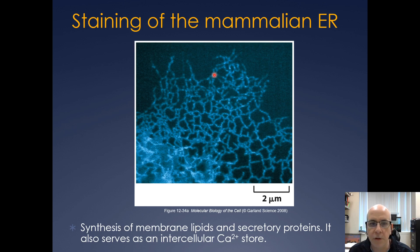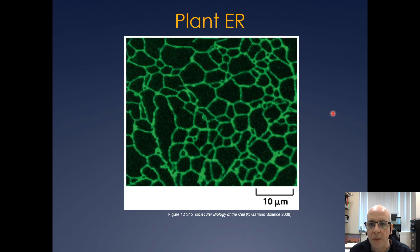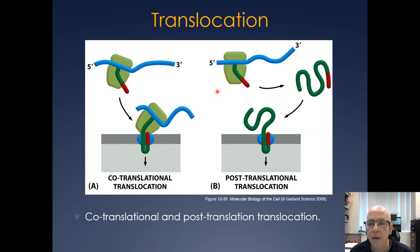Here is the endoplasmic reticulum stained in a mammalian cell. This is where all of the lipids and all of the secreted proteins are synthesized, as well as transmembrane proteins that are part of the organelles in the secretory pathway and the plasma membrane. The ER also serves as a calcium store — we saw that when we looked at IP3 signaling and how it causes a release of calcium from the ER. Here's an immunofluorescence of the ER in plants — it's a similar tubular structure that goes throughout the cell.